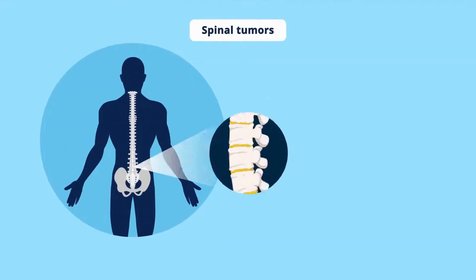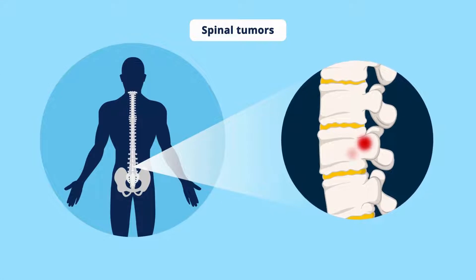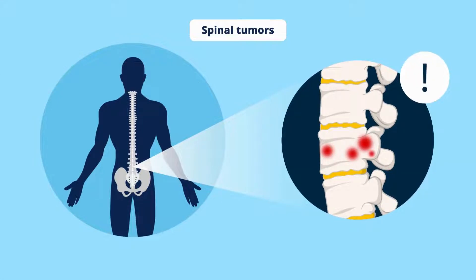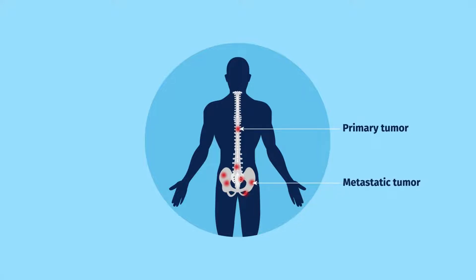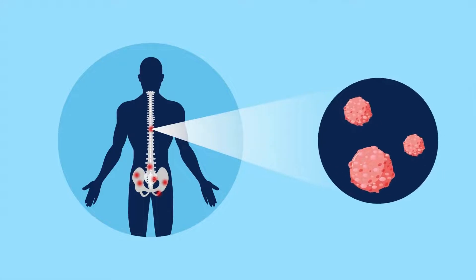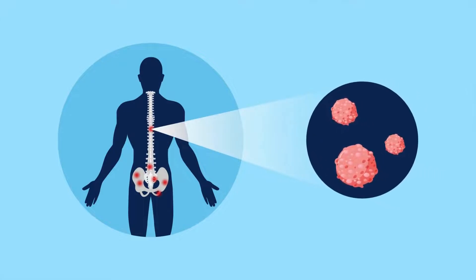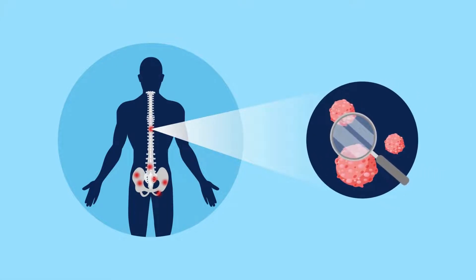Spinal tumors located within or around the spine can be difficult to diagnose and treat. These tumors are generally of two types: the relatively rare primary tumors and the more commonly occurring metastatic tumors. An accurate diagnosis of the specific tumor type can ensure effective treatment with better patient outcomes.